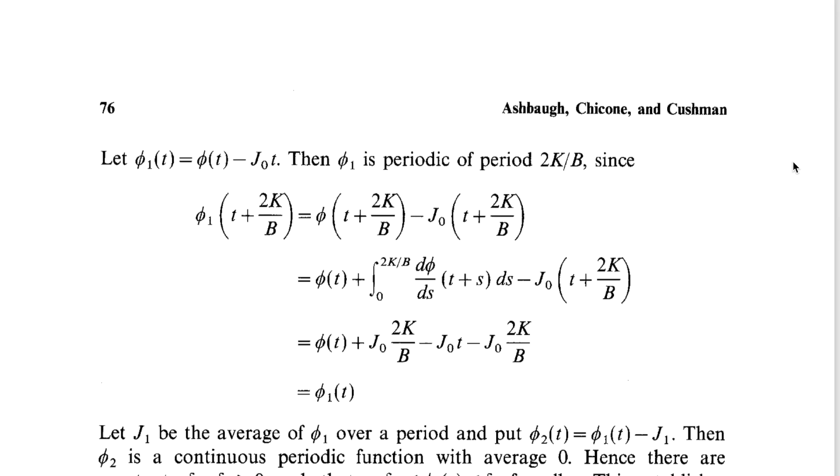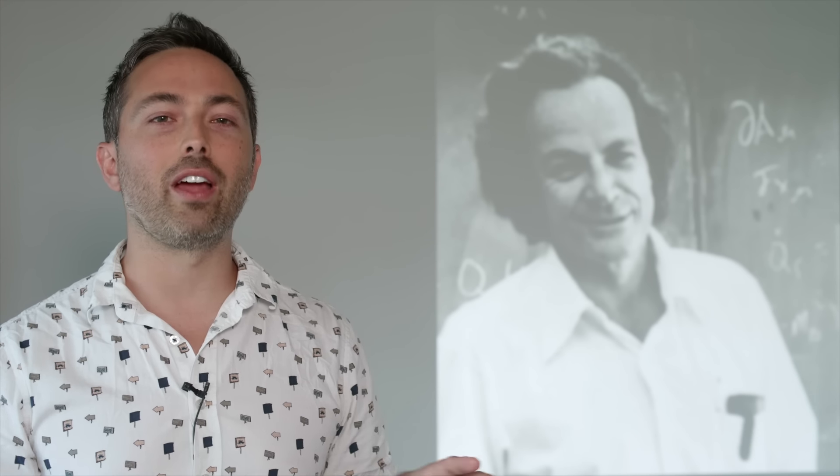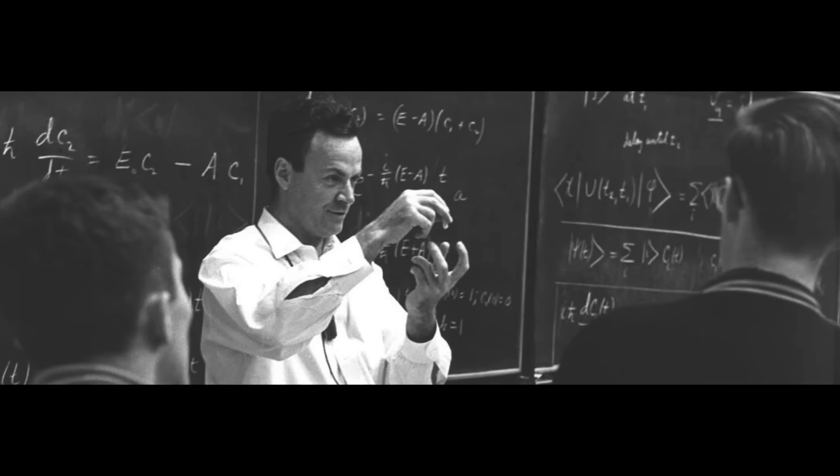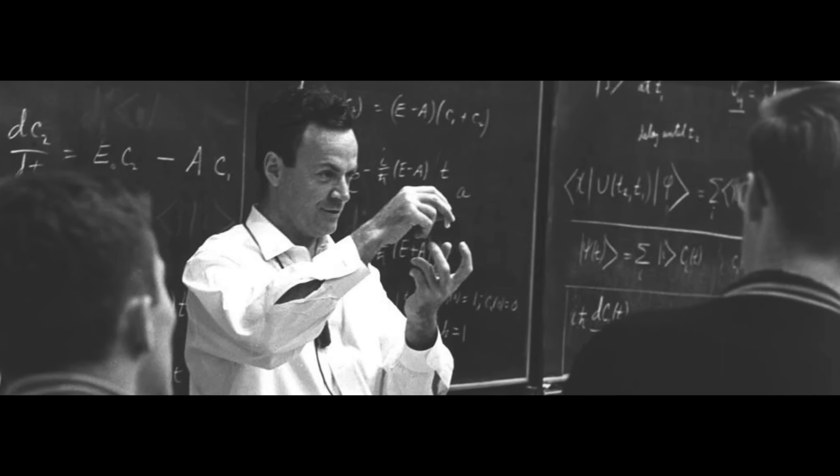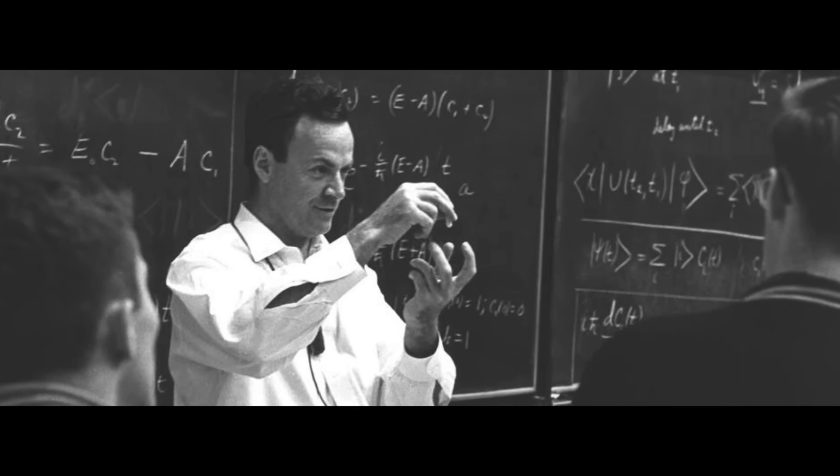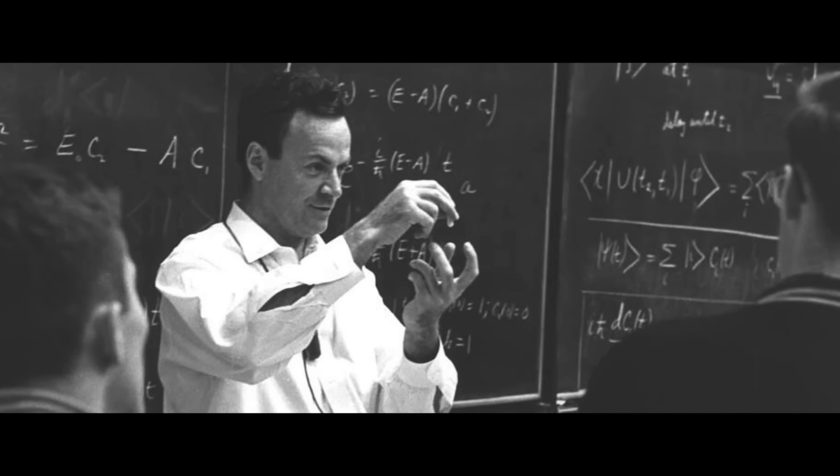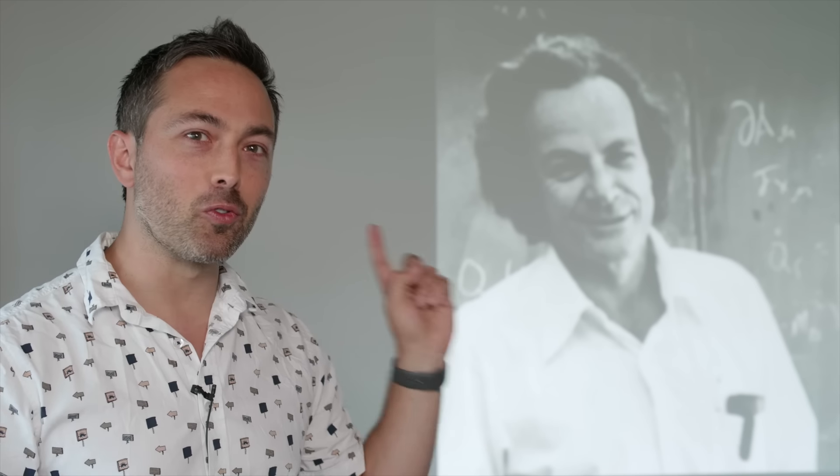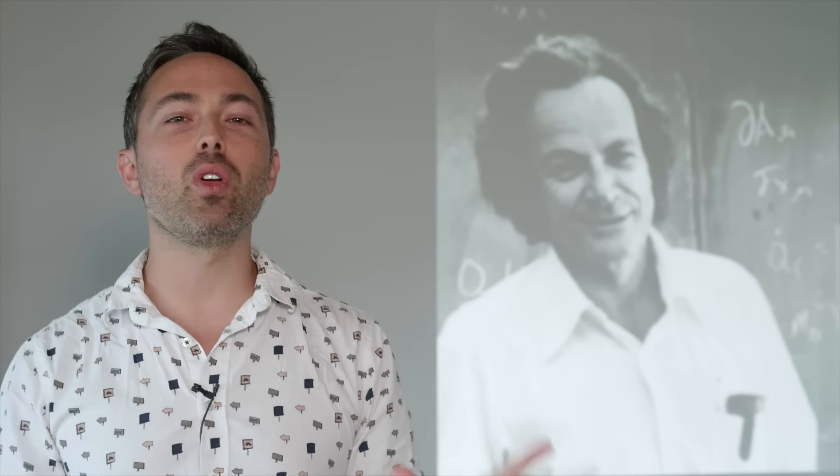There's this story of a student who asked famous physicist Richard Feynman if there was any intuitive way of understanding the Intermediate Axis Theorem. And as the story goes, he thought about it carefully and deeply for 10 or 15 seconds, and then said, No. Well, the goal of this video is to prove Feynman wrong. To provide an intuitive explanation of the Intermediate Axis Theorem.